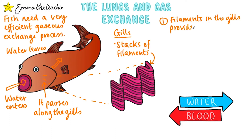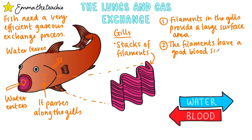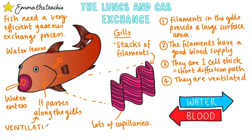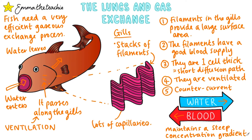The first adaptation is that the filaments provide a large surface area. They also have a good blood supply with lots of capillaries along them. The gill filaments and capillaries are just one cell thick, which provides a shorter path for diffusion, and they are ventilated as water containing oxygen is actively moved over the gills. Finally, they maintain a counter current — this means that the blood moves in the opposite direction to the flow of the water. This is good because it maintains a steep concentration gradient for diffusion. Hopefully you can spot that there are some similarities between gas exchange in the human lungs and the gills of the fish.